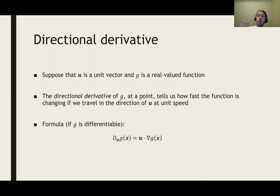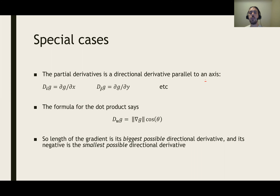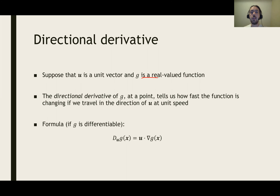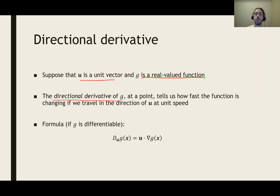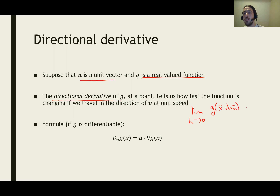For taking a directional derivative, we need two things. The first thing we need is a real valued function. The second thing we need is a unit vector that tells us the direction where we're going to be taking this derivative. The directional derivative of g at a point tells us how fast the function is changing if we go in that direction at unit speed. It has a limit definition: the limit as h goes to zero of g of x plus h times this unit vector, minus g of x, divided by h.